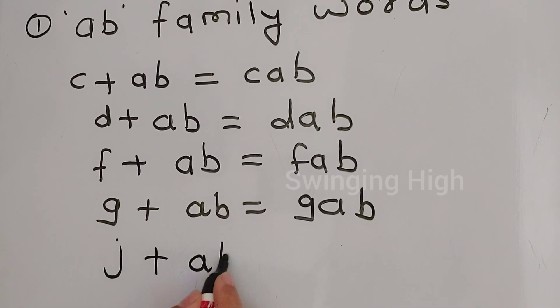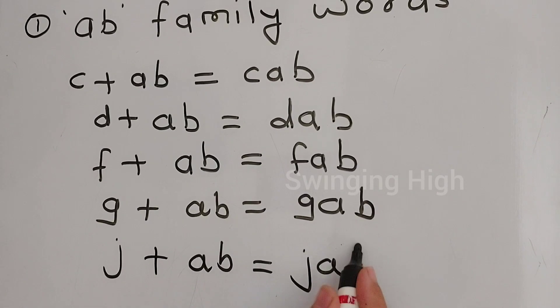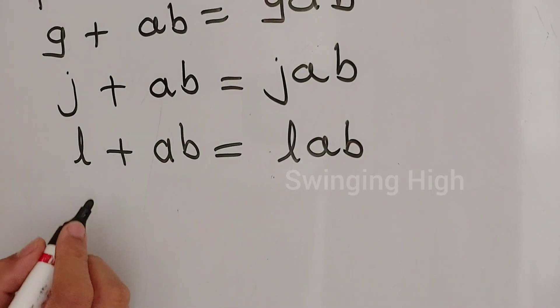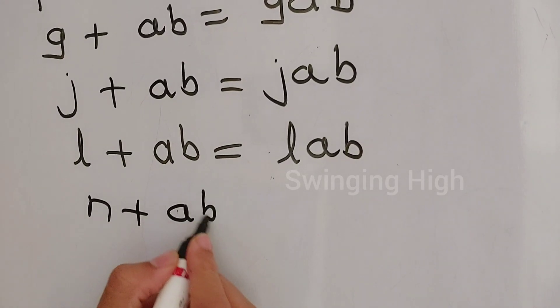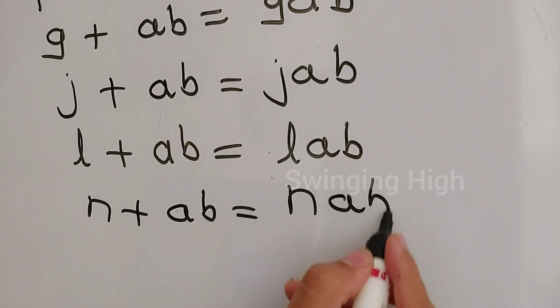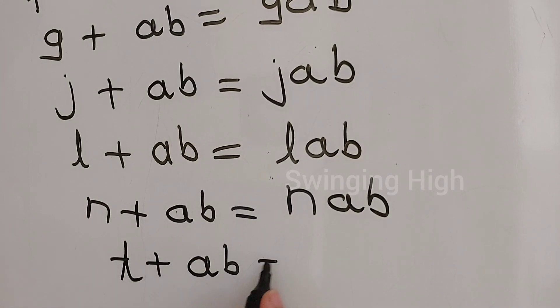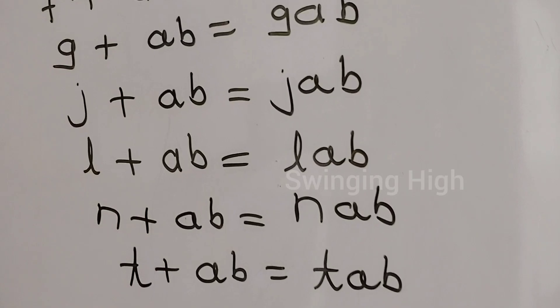J-ab, jab. L-ab, lab. N-ab, nab. T-ab, tab. These are the ab family words.